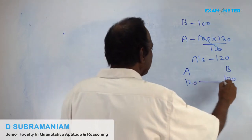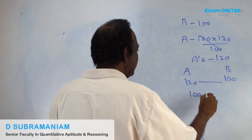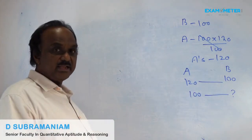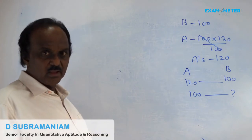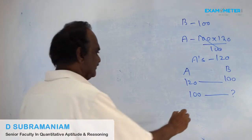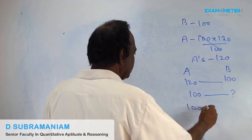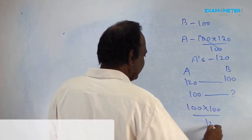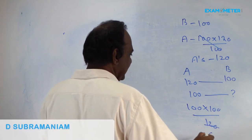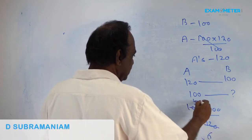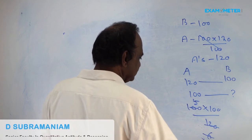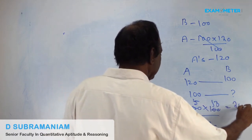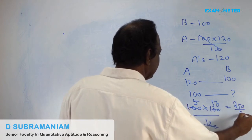If A's salary is 120, B's salary is 100. If A's salary itself is 100, how much is B's salary? 100 × 100 / 120. Cancel: 20 cancels 6 times, then 2 cancels 3 times, giving 250/3.